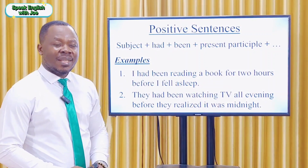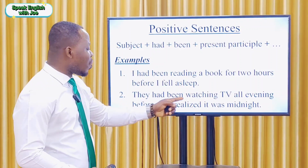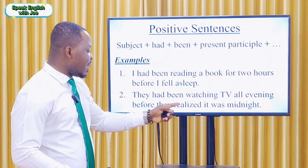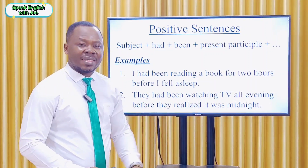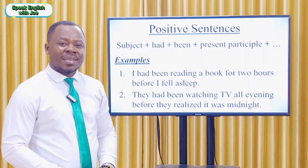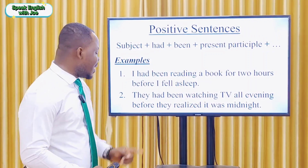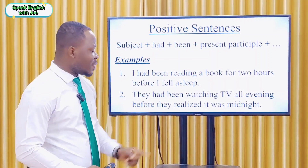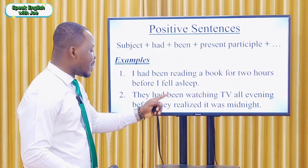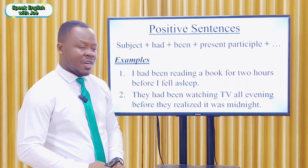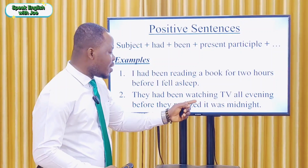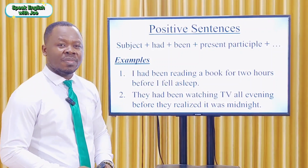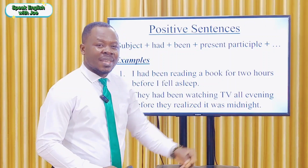Example two: 'They had been watching TV all evening before they realized it was midnight.' In this sentence, the subject is 'they', plus the two helping verbs 'had' plus 'been', plus the main verb 'watch' plus -ing (the present participle), and plus the rest of the sentence.